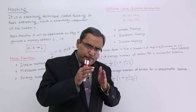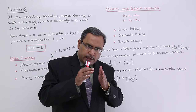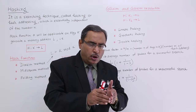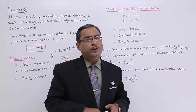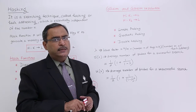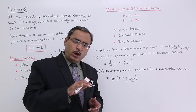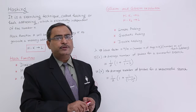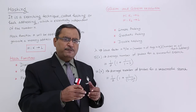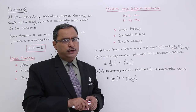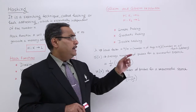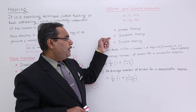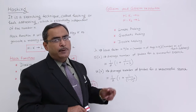Sometimes, applying the hash function on different key values may lead to the same memory address. When this situation occurs, it is known as a collision — two employee records are targeting the same memory location. Whenever collision occurs, there will be a collision resolution technique. We have different kinds: linear probing, quadratic probing, and double hashing.